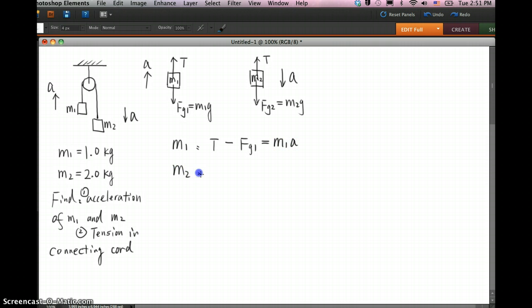For the second mass M2, obviously the acceleration is going down, so we must have a net force going down as well. So Fg2 subtract T is going to be the net force acting on M2, so it equals M2a. You can tell that both equations actually come from Newton's second law.